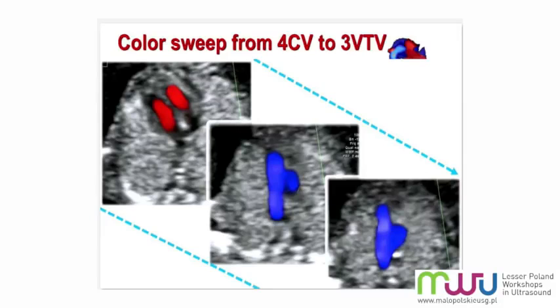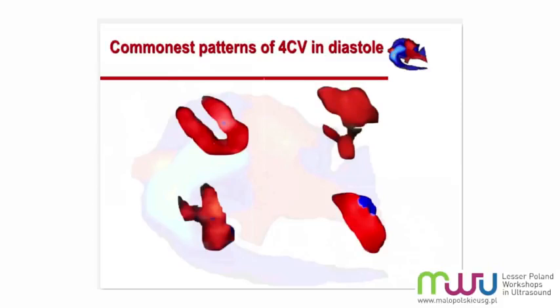If there was one vessel seen at the three-vessel and trachea view, we checked the level in between the four-chamber and three-vessel and trachea views to assess the arrangement of the arterial segments, because this is suspected of transposed great arteries. From our preliminary experience, we identified several typical patterns in the first trimester early cardiac evaluation, as shown here.